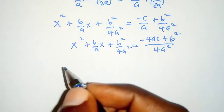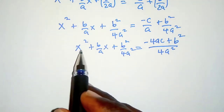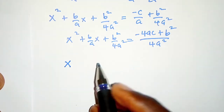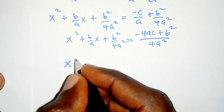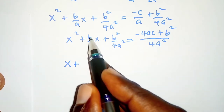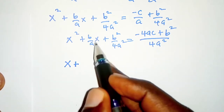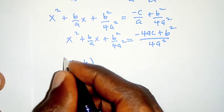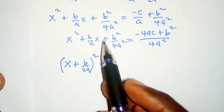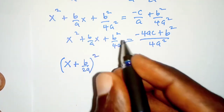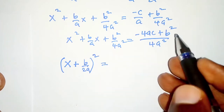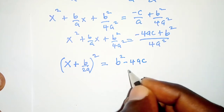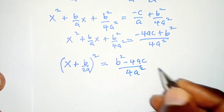Factorizing the left hand side — remember, it is a perfect square — we take x and then consider the sign that follows, which is plus, and then half of this coefficient, which is b over 2a, and then square it. On the right hand side we have b squared minus 4ac all over 4a squared.